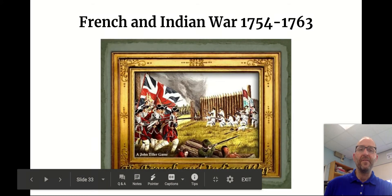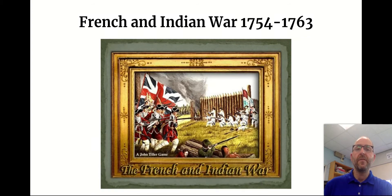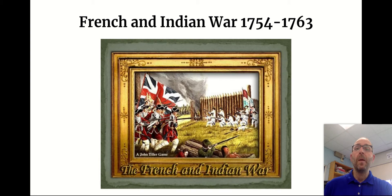The first event for 1754 to 1800 is the French and Indian War, from 1754 to 1763. It's a war that pits the French and most of the Native Americans against the British and the North American colonists. In Europe, the French and the British are also fighting each other — they call that the Seven Years' War, which began in 1756.